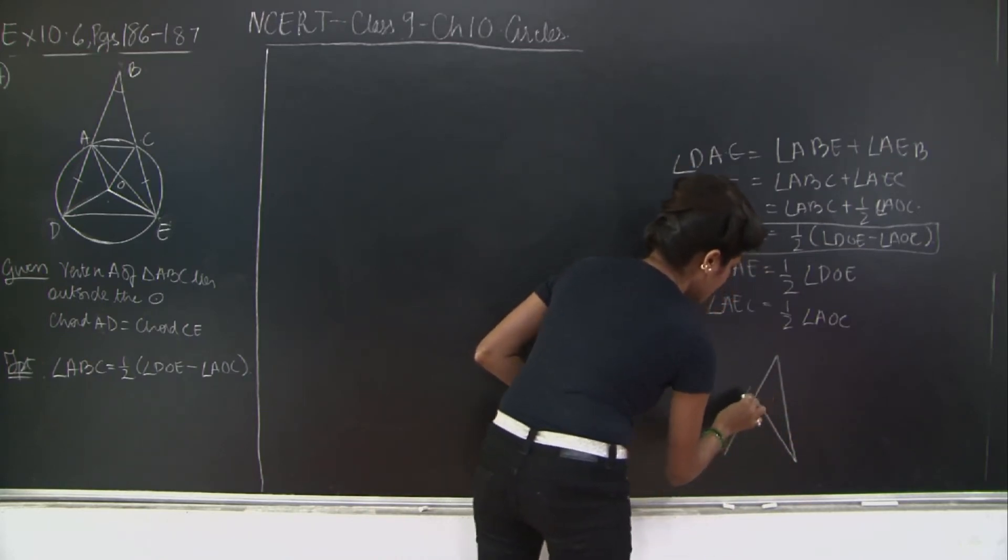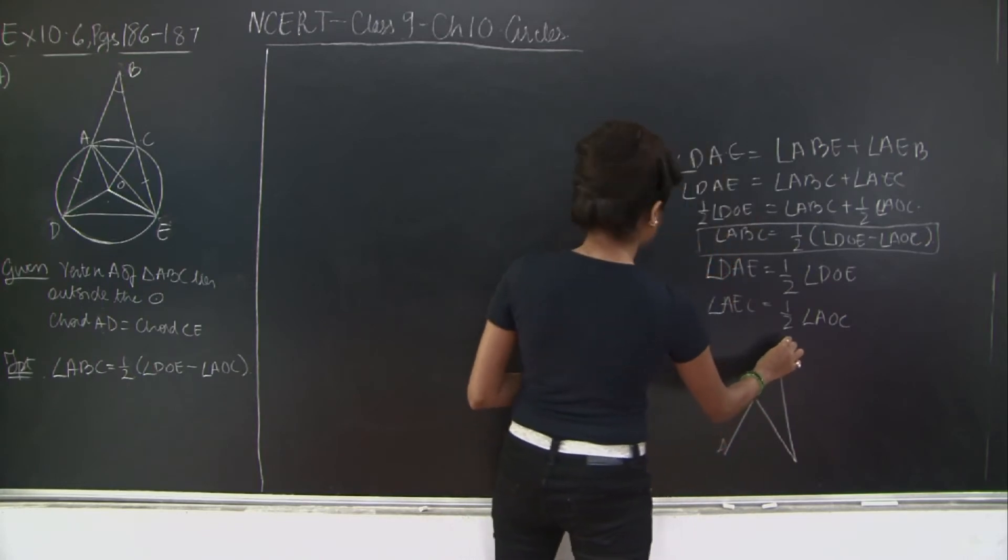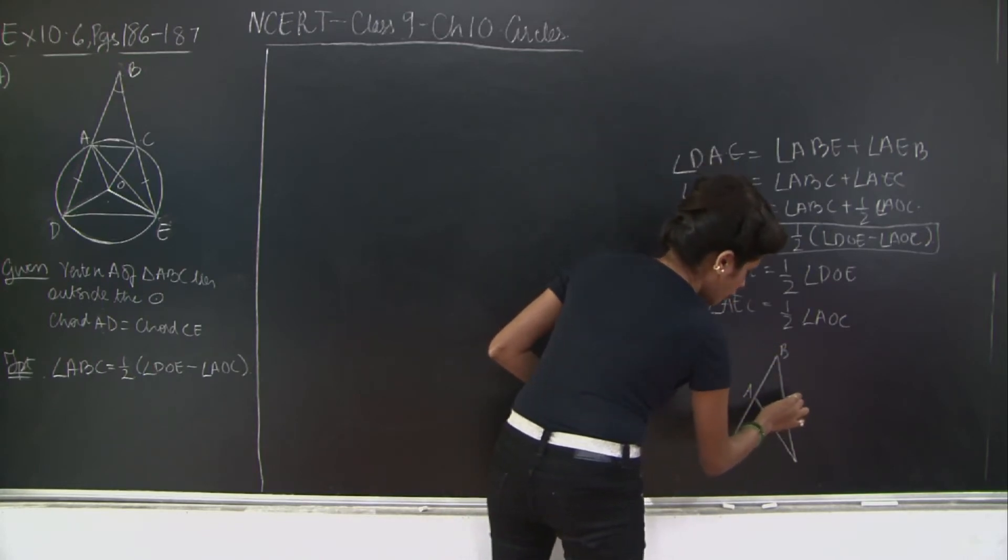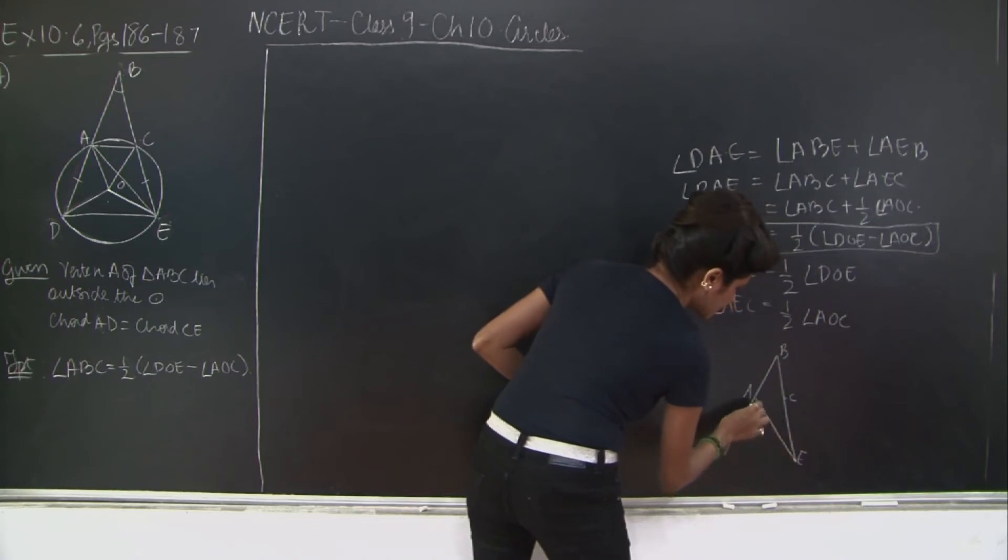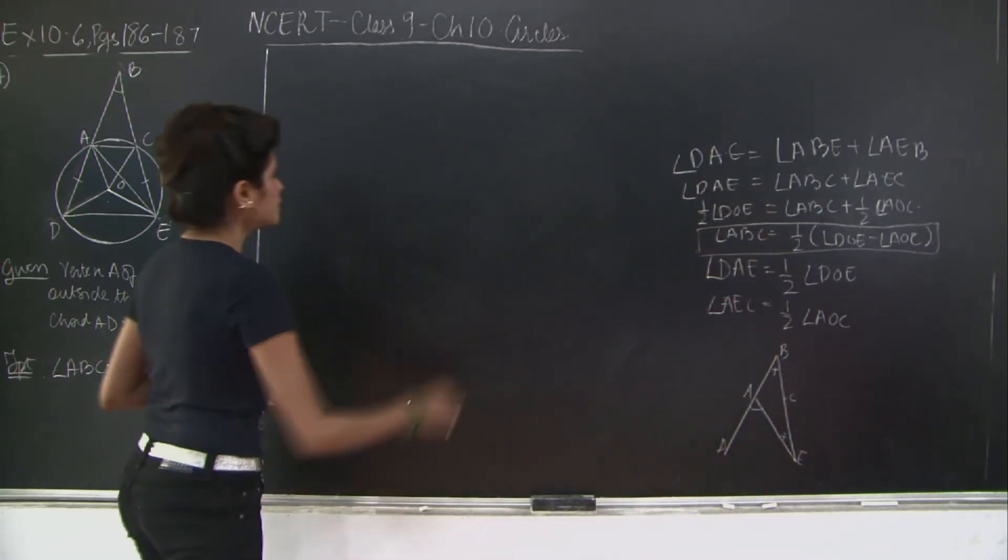So I am going to erase this section and for reference I will draw a smaller section over here. I have D, A, B, a point C, and E. So this angle is sum of this angle plus this angle. Okay? Let's start with our proof.